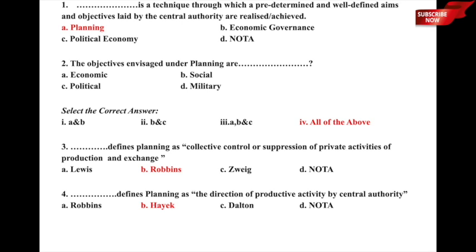The objectives envisaged under planning are dash. The options suggest a) economic and social, b) social and political, c) economic, social and political, or d) all of the above — that is economic, social, political as well as military objectives. The correct answer is option 4, all of the above. I hope that is clear.